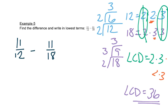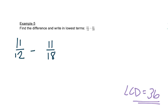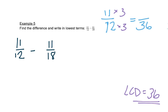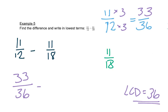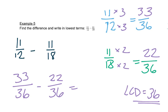Since our LCD is thirty-six, we rewrite both fractions with a denominator of thirty-six. Twelve times three is thirty-six, so we multiply the top and bottom of eleven twelfths by three, giving us thirty-three over thirty-six. For eleven eighteenths, eighteen times two is thirty-six, so we multiply top and bottom by two, giving us twenty-two over thirty-six. Now that the denominators match, we subtract: thirty-three minus twenty-two is eleven, so our answer is eleven over thirty-six.